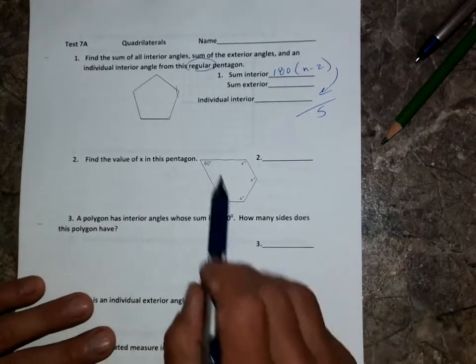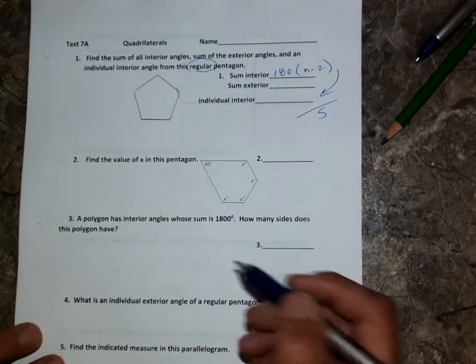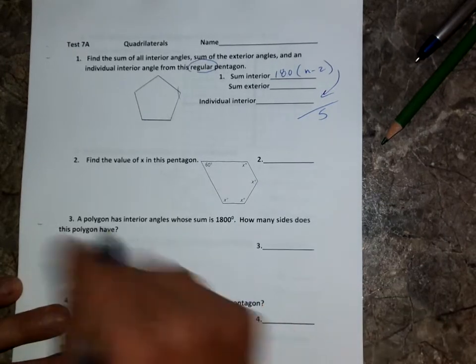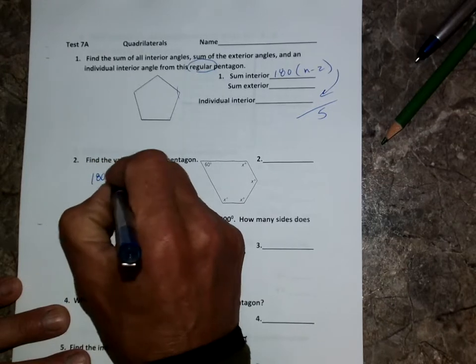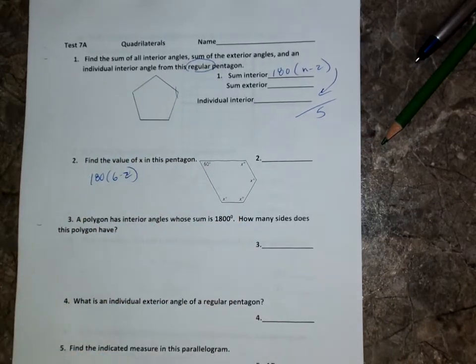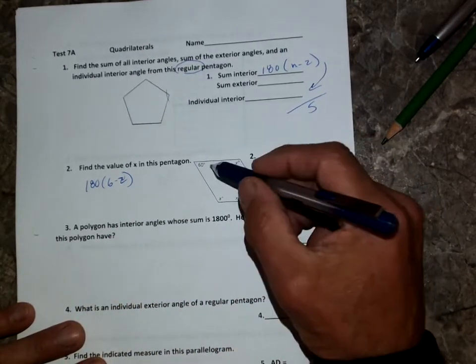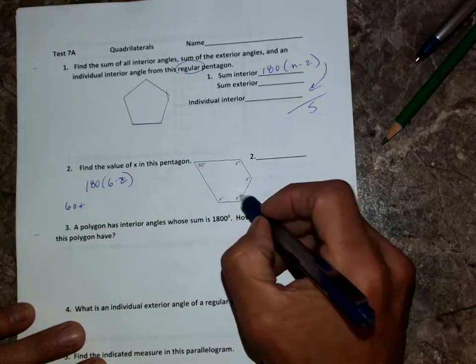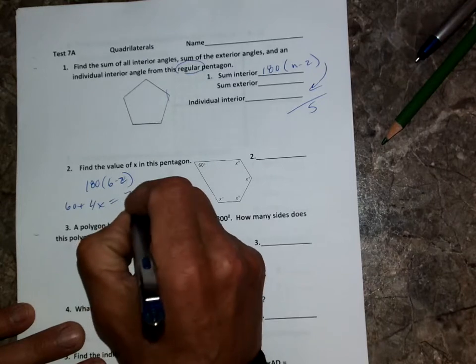Number two, there's six different angles, we know that we've got to find the sum of all the angles, which is the 180 times six minus two, and I think you get 720 if I remember right. So what you do is you go 60 plus four X's equals my 720. You guys can solve from there.